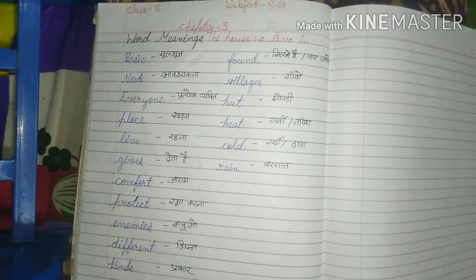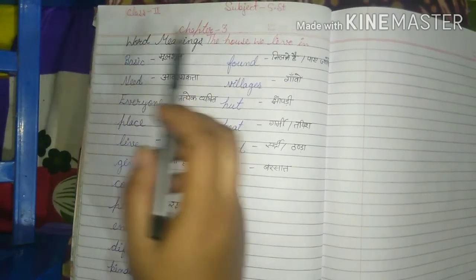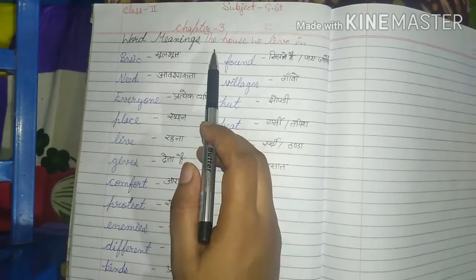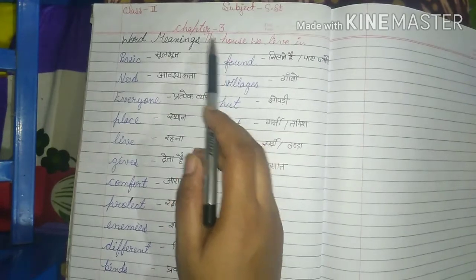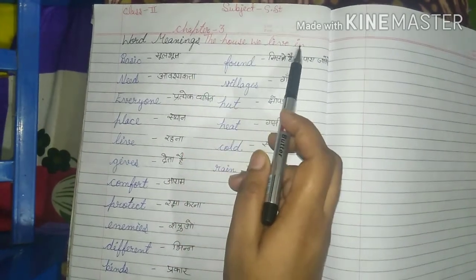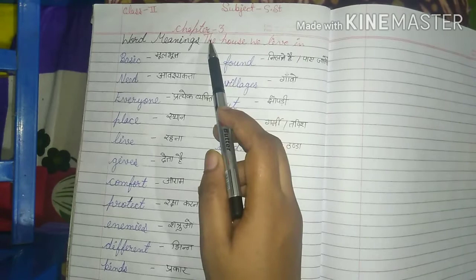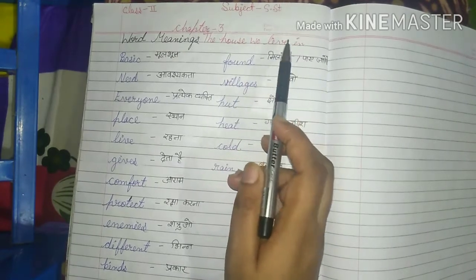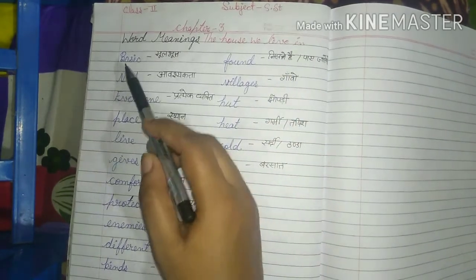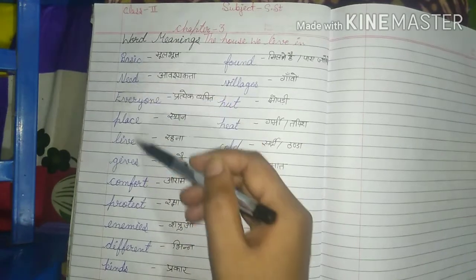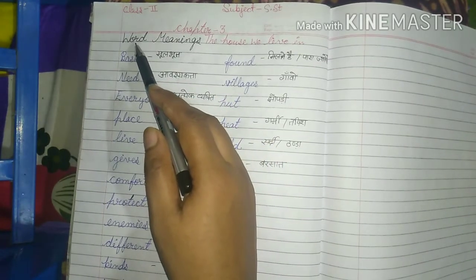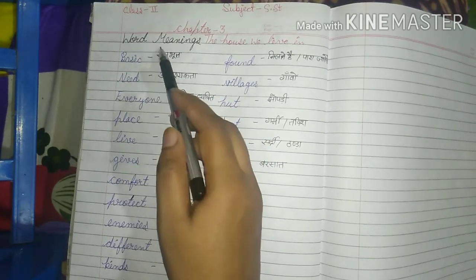Hello students, class 2nd, subject SST. The chapter going on is chapter 3rd — 'The House We Live In.' In the previous class I explained the paragraph and word meanings. Today I will explain word meanings.